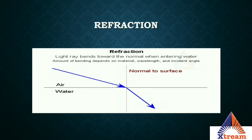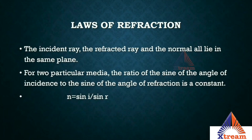When the incident ray travels from air to water, the speed of light reduces and the ray bends towards the normal. When the ray travels from water towards air, the speed of light increases and the ray bends away from the normal. That is refraction.